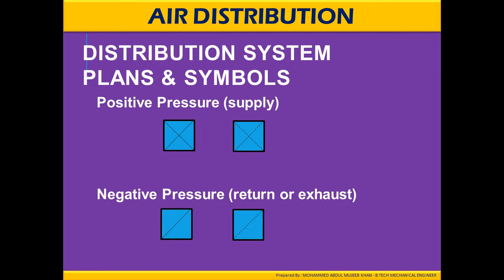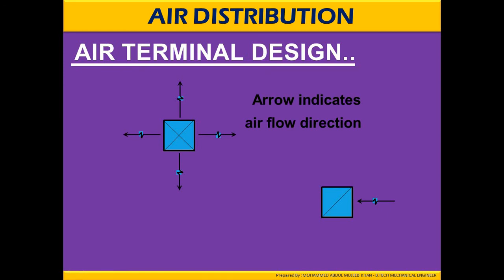Distribution system plans and symbols: here you can see the positive pressure supply, the negative pressure return or exhaust. These designations are used in duct drawings to identify duct types. The square design illustrates the supply air duct, and the negative pressure return or exhaust is drawn in a specific way. This is also shown with air terminal designs, airflow indications, and directions — a typical supply air diffuser versus a return or exhaust air duct symbol.